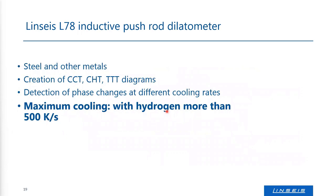With hydrogen, 500 Kelvin per second can be achieved. With helium, it can go up to 400 Kelvin per second. So with hydrogen gas, 100 Kelvin per second more is possible.